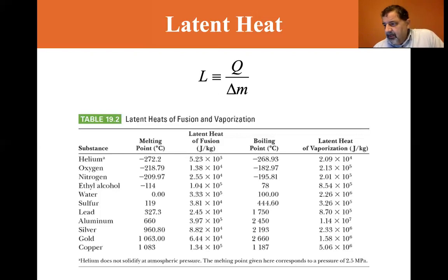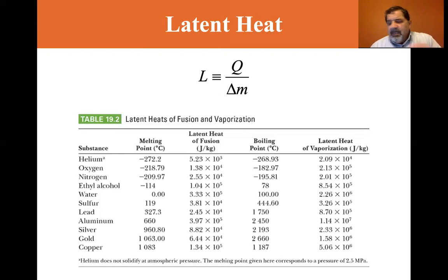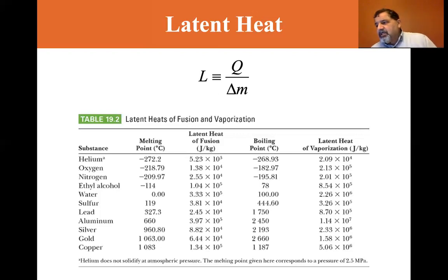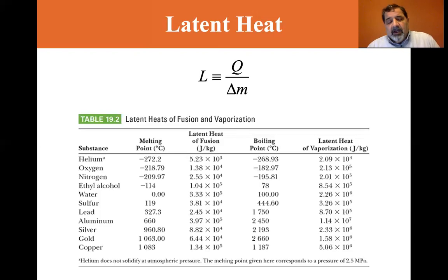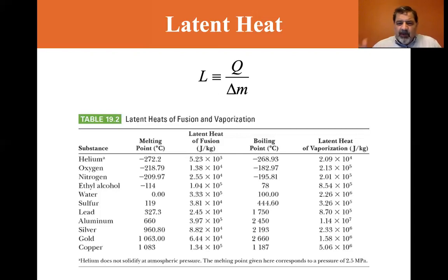When energy enters the system causing melting or vaporization, the amount of higher-phase material increases, so delta-m is positive and Q is positive — you're putting energy in. When energy is extracted causing freezing or condensation, the amount of higher-phase material decreases, delta-m is negative and Q is negative. Delta-m always refers to the higher-phase material.